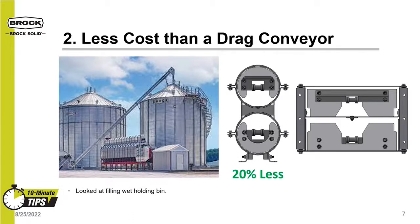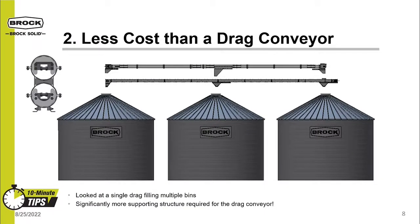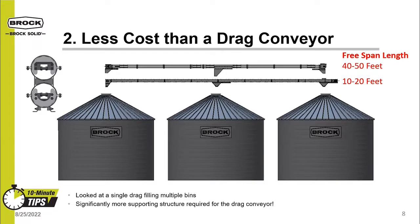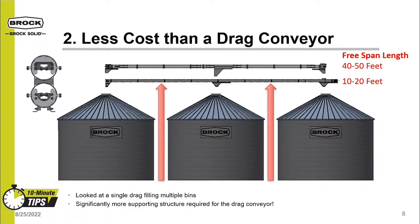But what about compared to a short flight drag conveyor? This scenario shows a tube conveyor and a drag conveyor both running above three 36-foot diameter Brock grain bins. Both types of conveyors can be used to fill these grain bins. However, due to the tube-on-tube construction of the tube conveyor, they can free span lengths of 40 to 50 feet versus only 10 to 20 feet for a drag conveyor. This longer free span allows the tube conveyor to bridge the distance between bin peaks with no additional support. The drag conveyor requires additional supporting structure between the bins, which further increases its cost, making the tube conveyor the more economical conveying method.